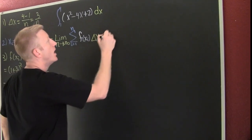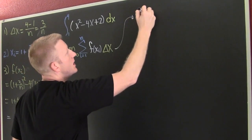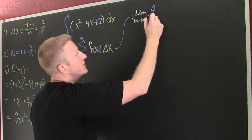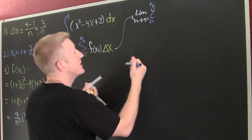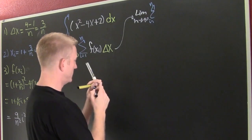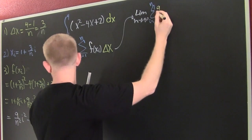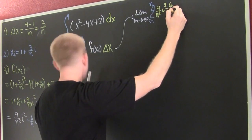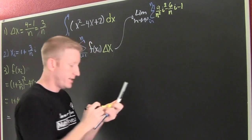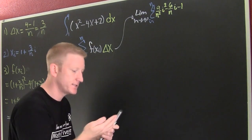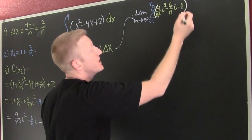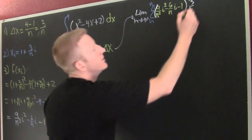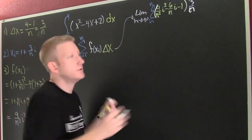Now I'm looking for the limit as n goes to infinity of the summation i equals 1 to n of f of xi times delta x. That f of xi is 9i²/n² minus 6i/n minus 1, and delta x is 3 over n. Let's multiply that in.